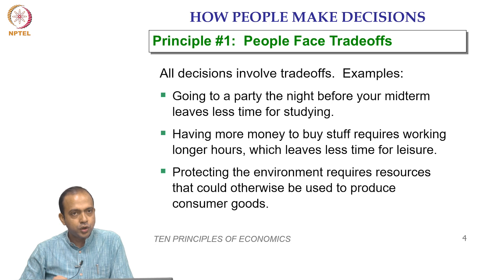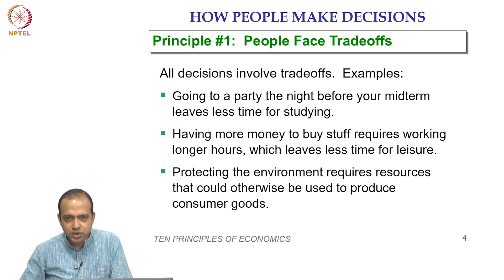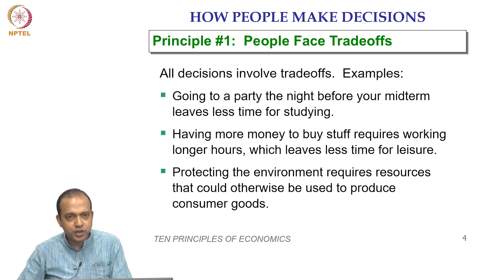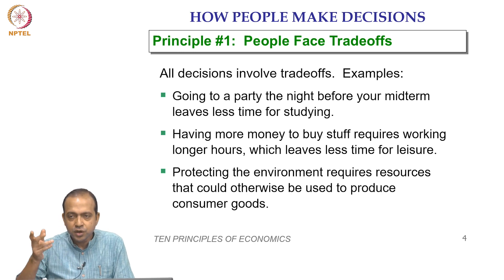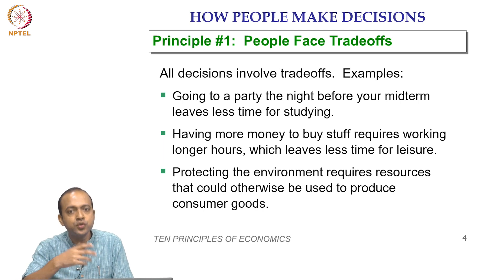If you want to protect the environment, that also requires resources — advanced technologies and more labour allocated for those activities — which are then not available for producing consumer goods. So whether you go for a clean environment or more consumer goods, there is also a trade-off. We cannot achieve both together because resources are again limiting.